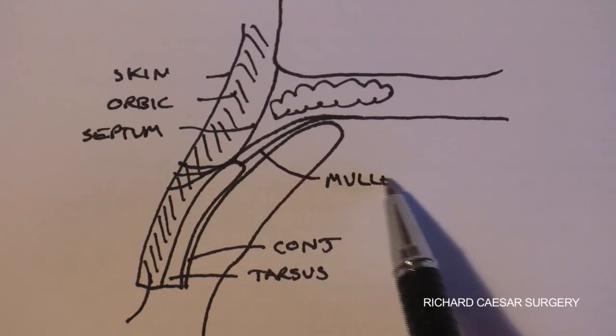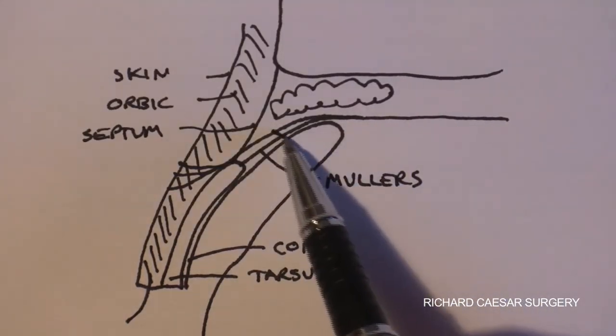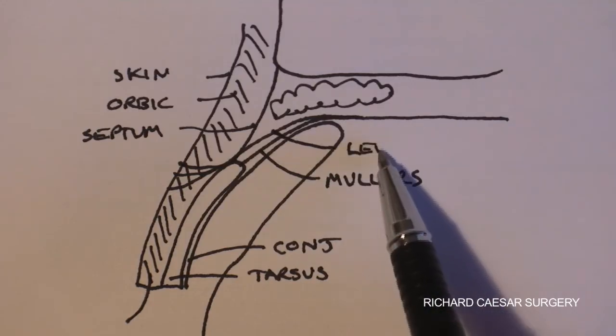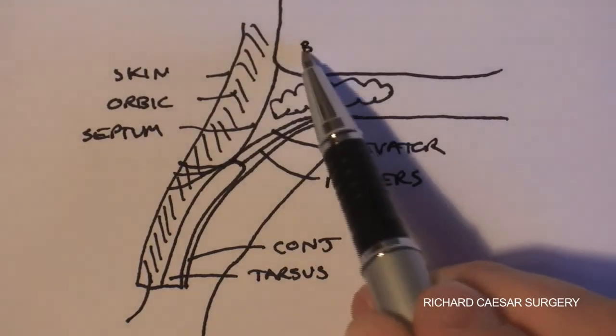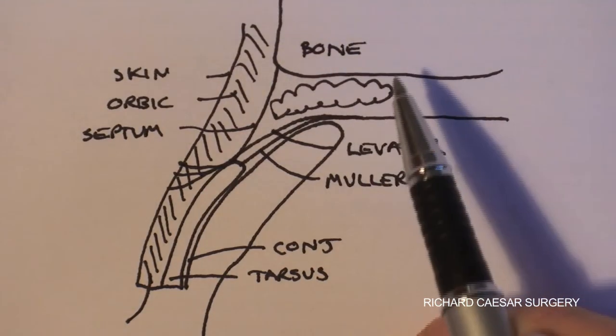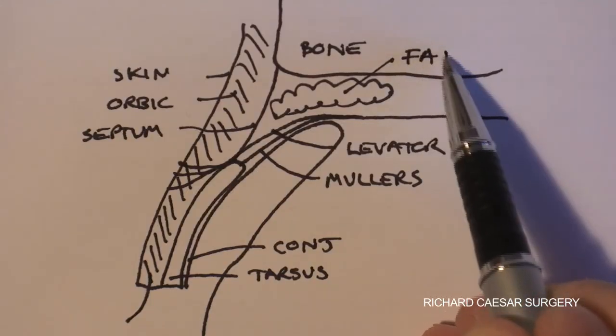Muller's muscle connects to the top of the tarsal plate with the levator itself, anterior to Muller's. And the fat pad behind the septum.